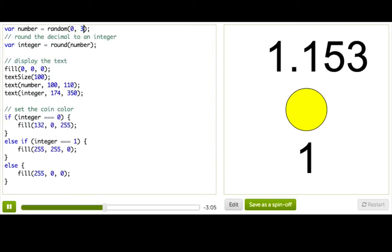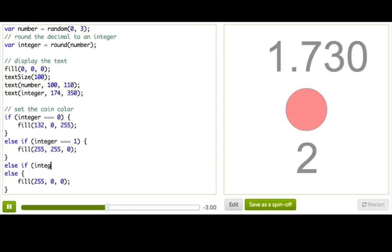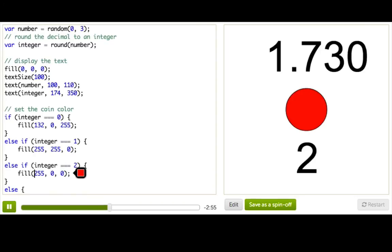I'm going to make a number between 0 and 3, and then just add one more else block that says, else if integer is equal to 2, we'll set the fill color to, well it was red before, we can keep it red.